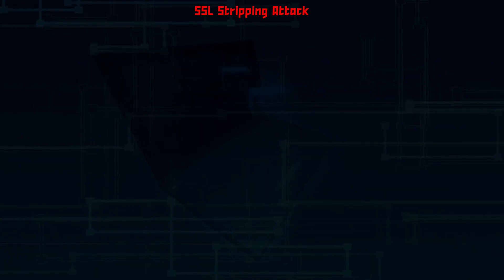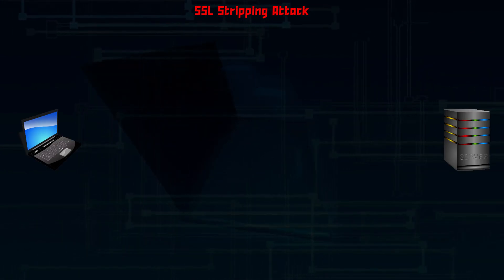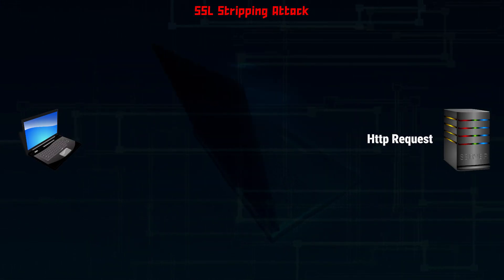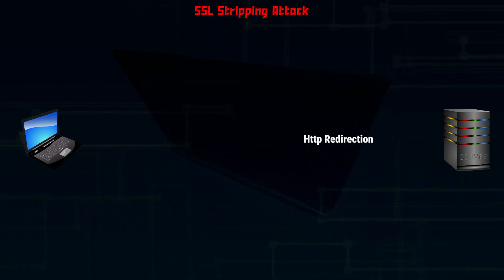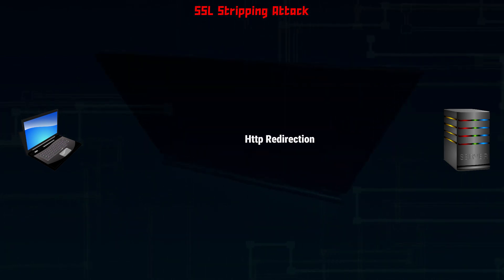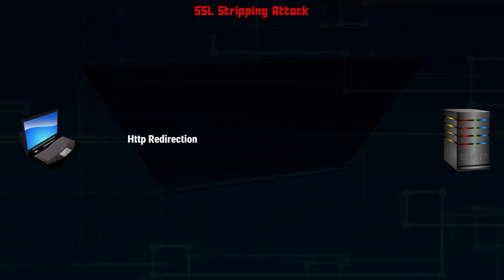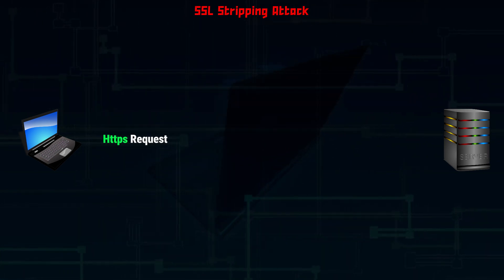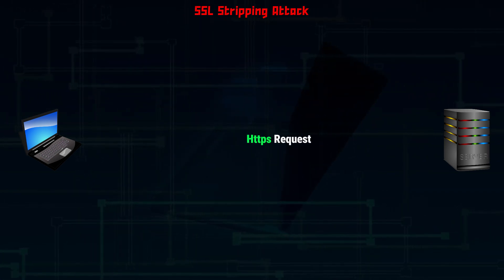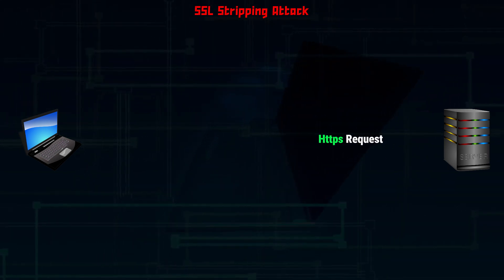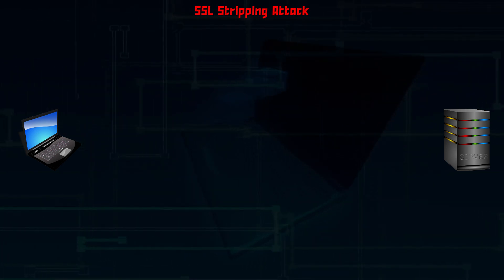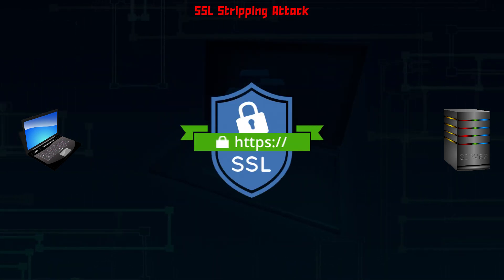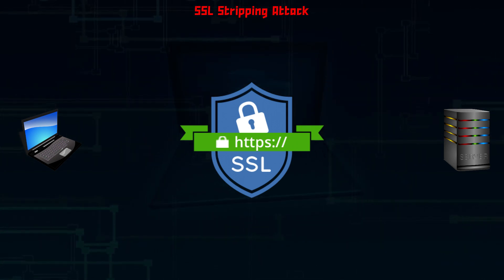How does SSL stripping work? The user requests the server with an unsecured HTTP request. The server responds via HTTP and redirects the user to HTTPS, which is a secure connection. The secure session begins with an HTTPS request, and the SSL encryption process guarantees both integrity and privacy.